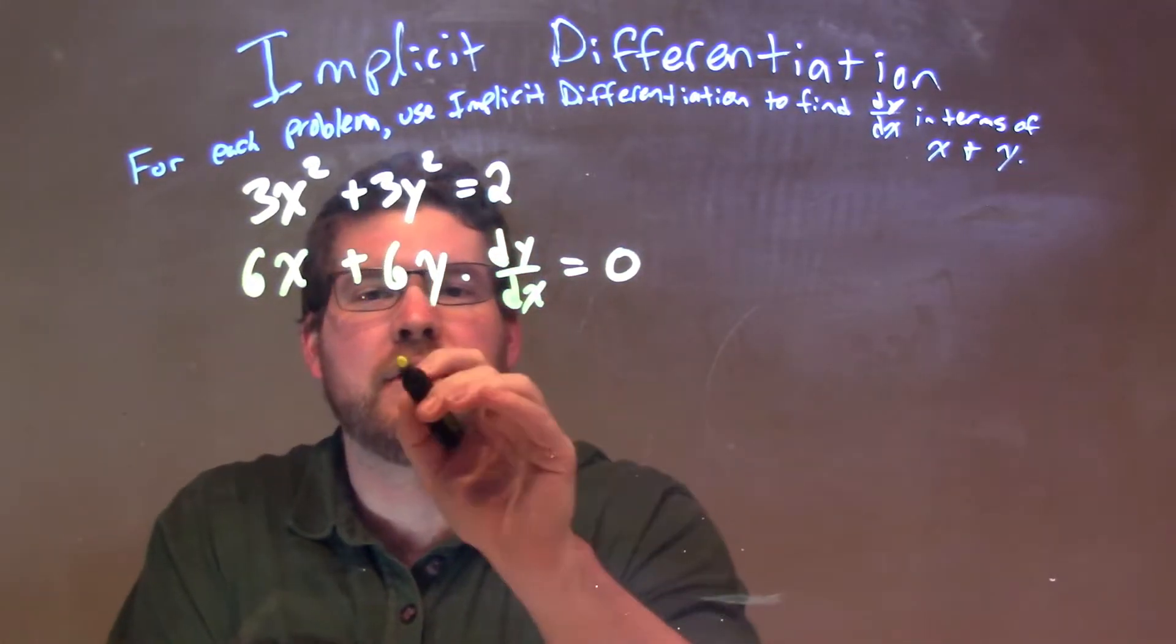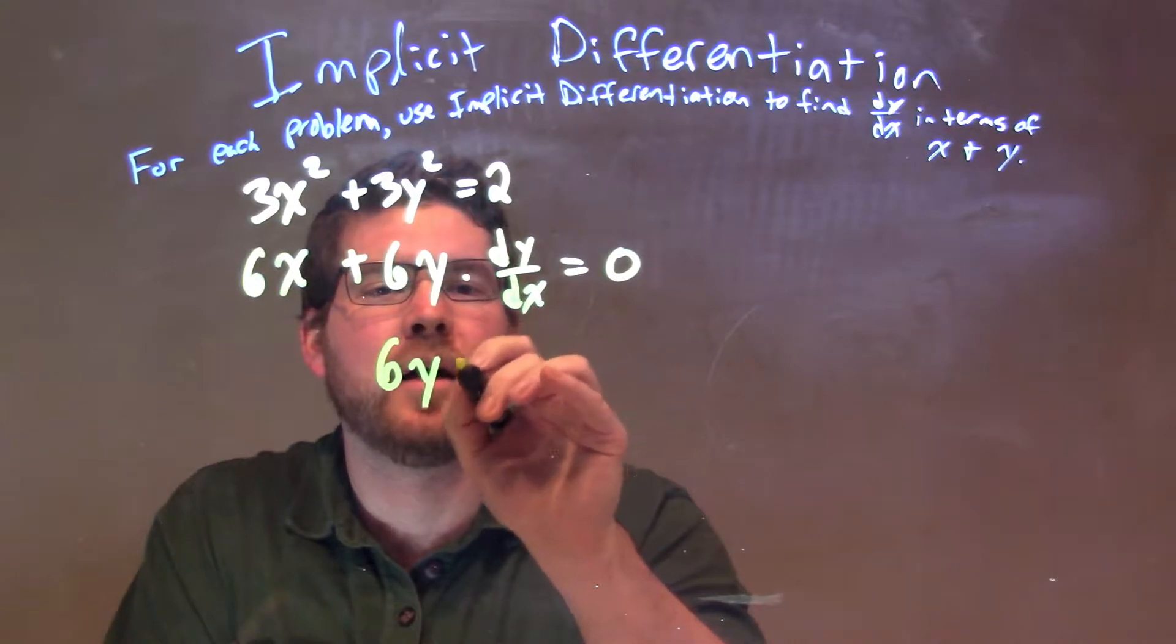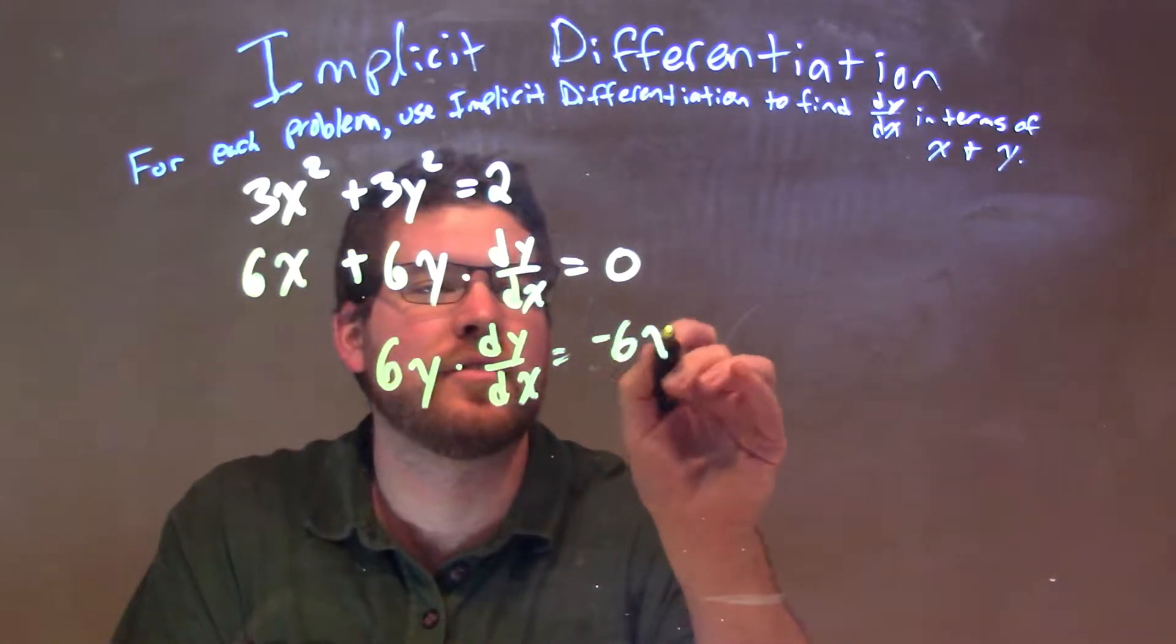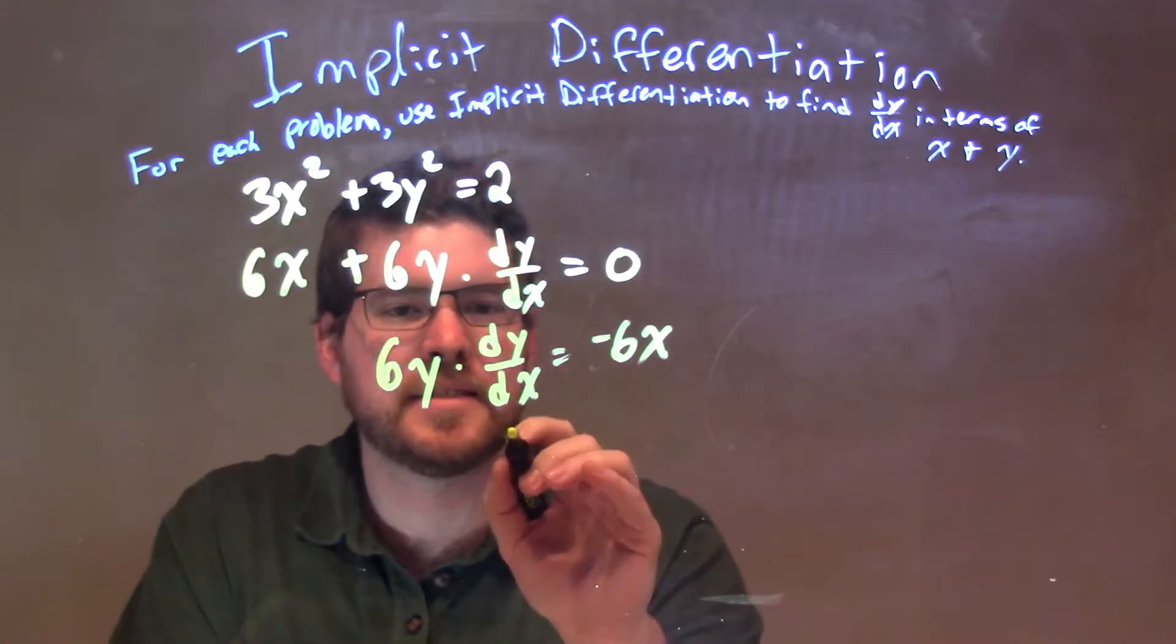So subtract 6x from both sides. 6y times dy/dx is equal to negative 6x here. Then I divide by 6x on both sides.